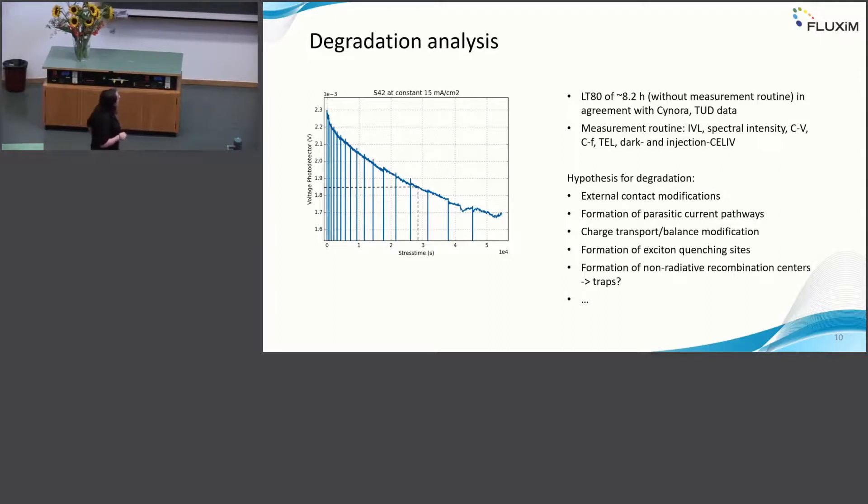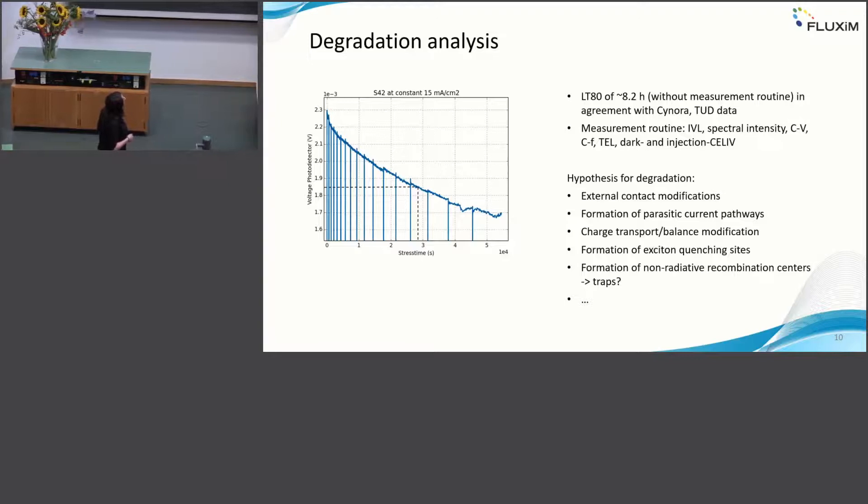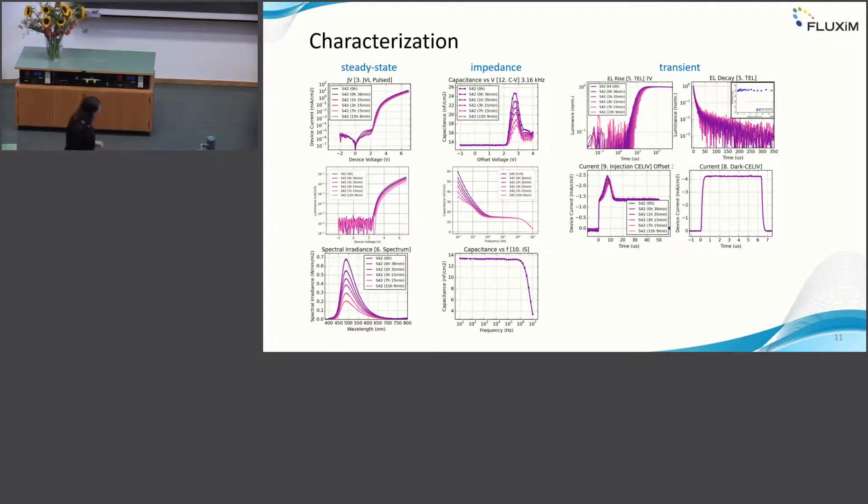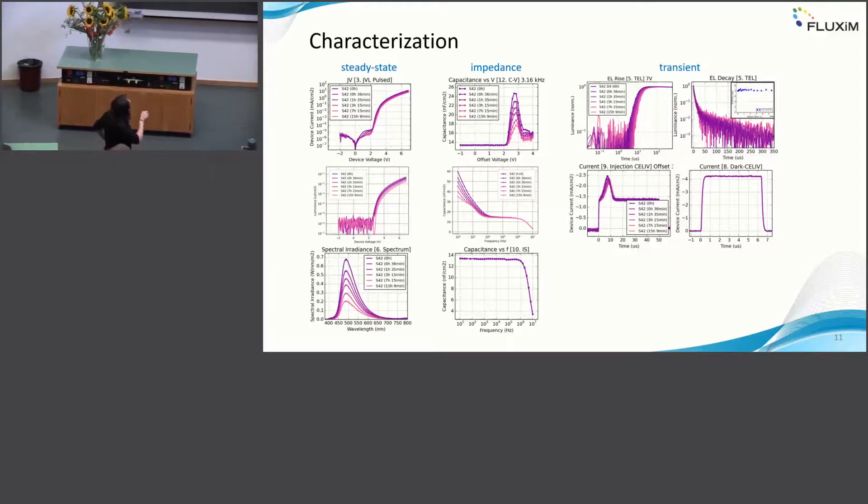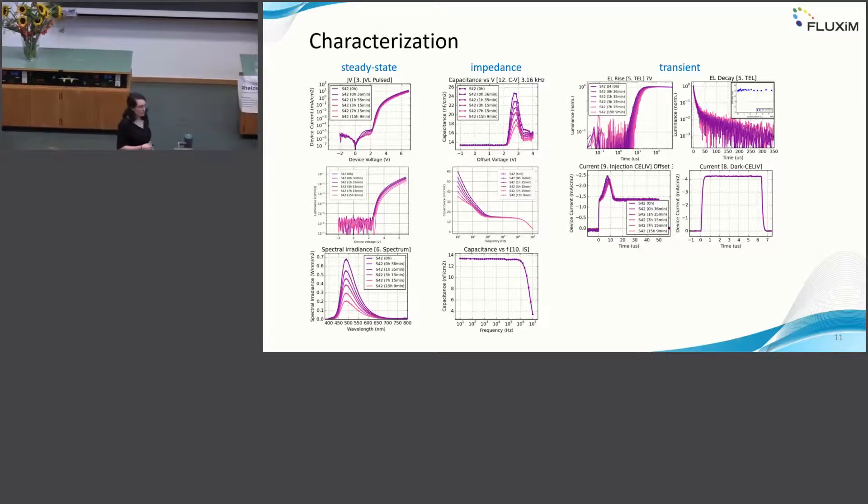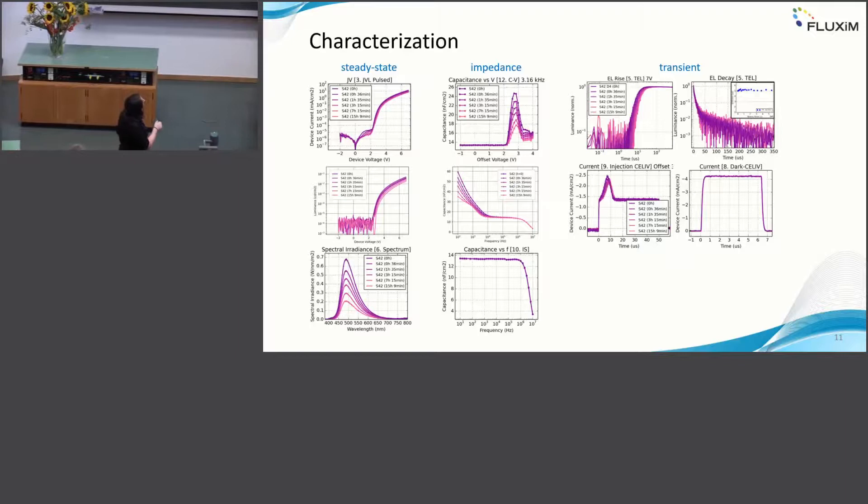Then we analyze this as a function of stress time and hope to understand what is going on in the device. For degradation, there is a lot of hypothesis. I will not go into detail now, but these are just a few hypotheses that I will follow in the following analysis. These are selections of graphs as a function of stress time. We do not only measure steady state performance, IV luminance and spectral density, but we also have impedance data and transient data. It's very important to have all these kinds or a lot of different measurements and not only the steady state analysis.